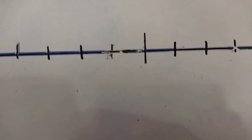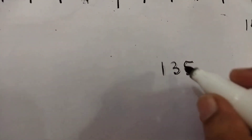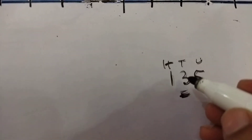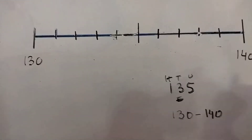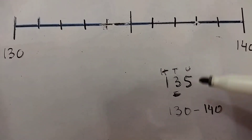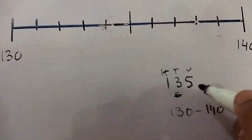Now, if we have the number 135 and need to round it to the nearest tens: first, we find the two surrounding tens. Looking at the tens digit, which is 3, that means the surrounding tens are 130 and 140. We draw a number line between 130 and 140. We need to find where 135 lies — of course, it is the halfway point.